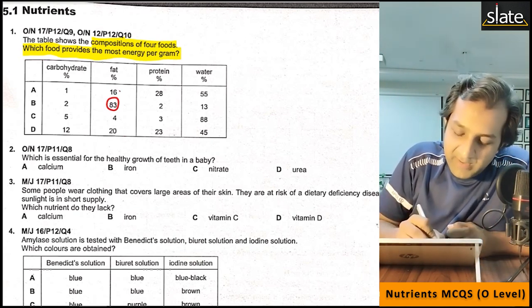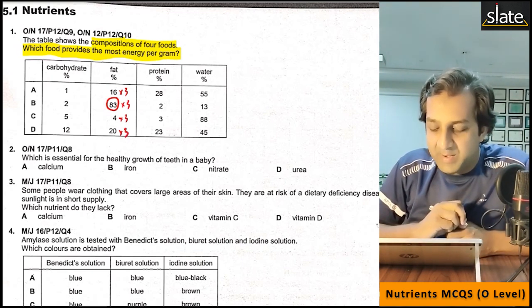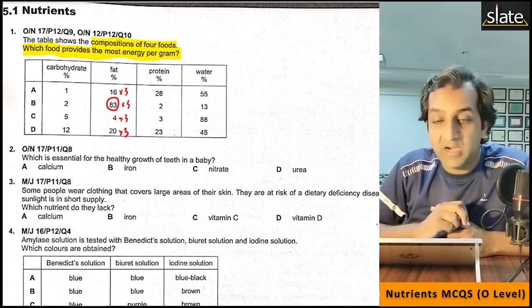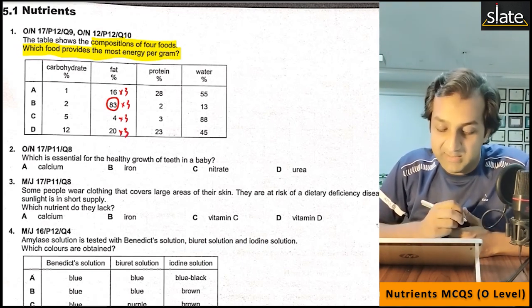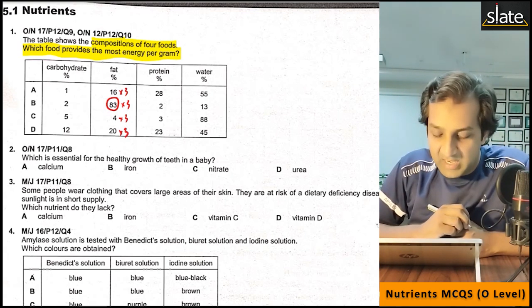The method is to multiply the fat percentage by 3. So: 16 into 3, 83 into 3, 4 into 3, 20 into 3. Look at which gives the highest value — that tells you the most energy per gram.